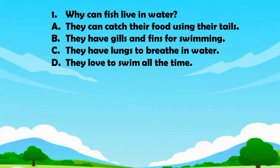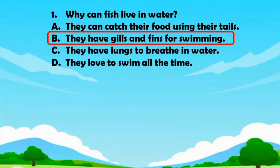Question number one. Why can't fish live in water? A. They can catch their food using their tails. B. They have gills and fins for swimming. C. They have lungs to breathe in water. D. They love to swim all the time. The answer is B. They have gills and fins for swimming.